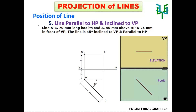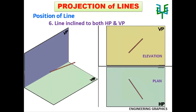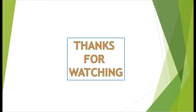The next case is line inclined to both planes — that is, both the horizontal plane and the vertical plane. This case will be explained in detail with some examples in our next videos. See you in the next video. Bye-bye.